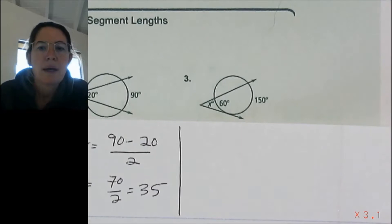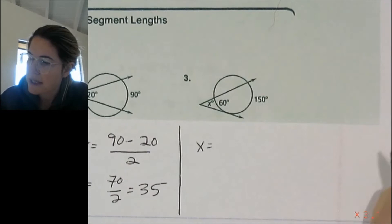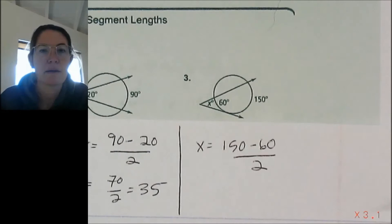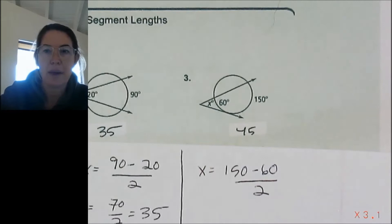Number three is also intersecting outside. So the angle formed is equal to the big arc minus the small arc divided by 2, and that is going to be 45 degrees.